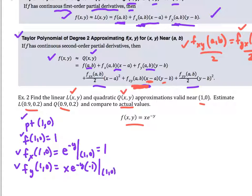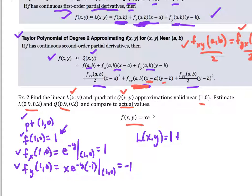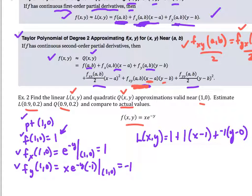So now for my linear approximation L(x, y): my evaluation at the point is 1, so it's going to be 1 plus... my partial in the x direction is 1, and then I have x minus a, which is (x-1). Then plus my partial with respect to y, which is negative 1, times (y - 0). So that would be my linear approximation L(x, y).